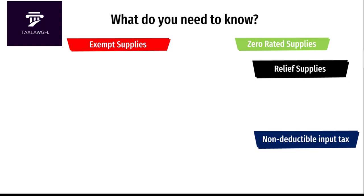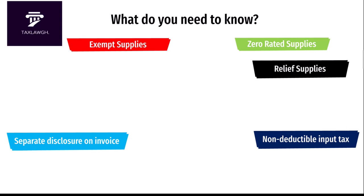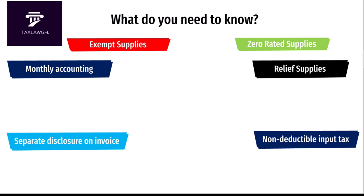Similar to the National Health Insurance Levy and the Ghana Education Trust Fund levy — which are both non-deductible or non-recoverable input taxes — the COVID-19 Health Recovery Levy is also a non-deductible or non-recoverable input tax. The GRA's administrative guidelines also clearly state that the COVID-19 Health Recovery Levy must be separately disclosed on the face of invoices, with a separate box on the GRA's new invoice format. For monthly accounting, similar to VAT and the other levies, the COVID-19 Health Recovery Levy is to be accounted for on or before the last working day of the subsequent month. The effective date remains the 1st of May 2021.